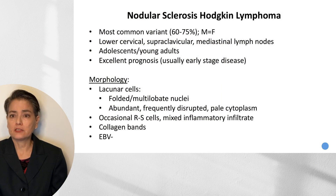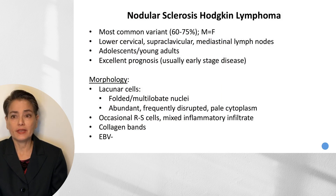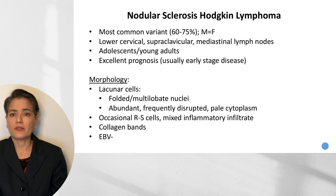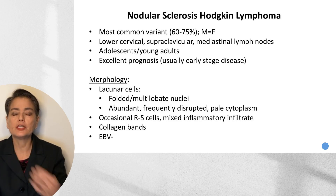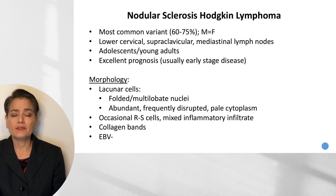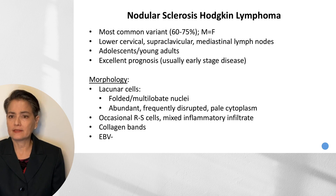Nodular sclerosis Hodgkin lymphoma is the most common variant, accounting for about 60% to 75% of cases. There is an equal sex prevalence. The lymph nodes typically involved are the lower cervical, supraclavicular, and mediastinal lymph nodes — a patient may present with a non-tender mass in the supraclavicular region. Patients are typically adolescents or young adults, and because the disease presents at early stage — stage one or two — it tends to have an excellent prognosis.